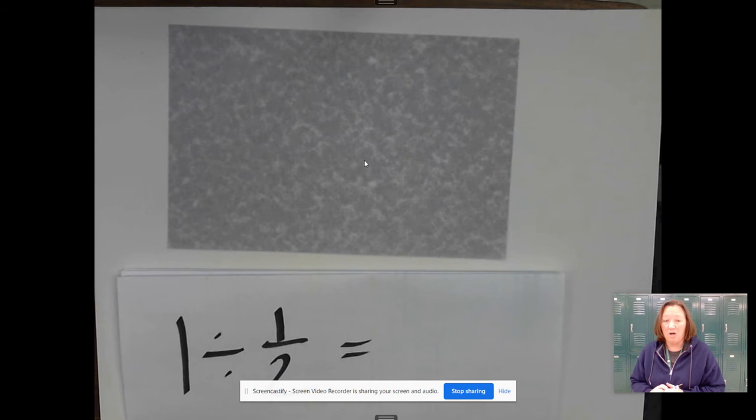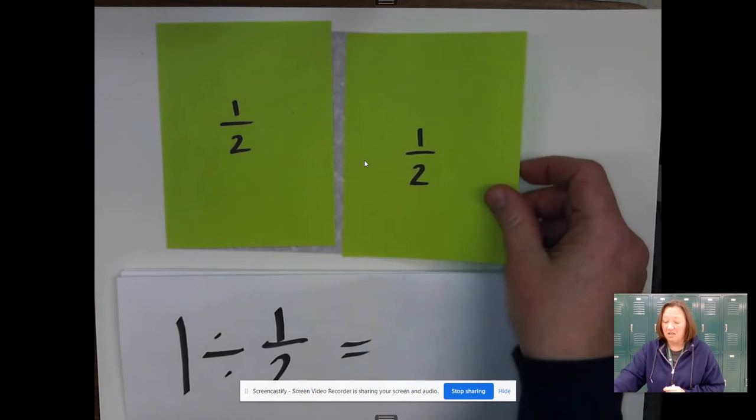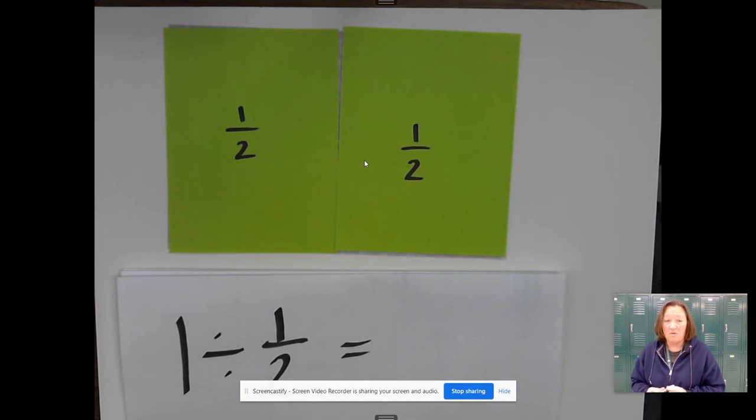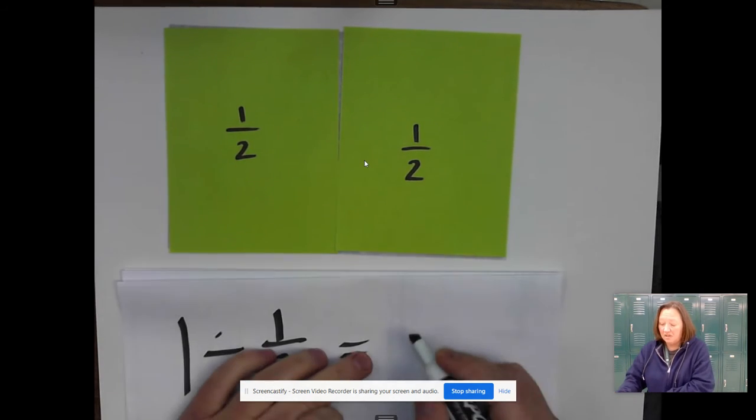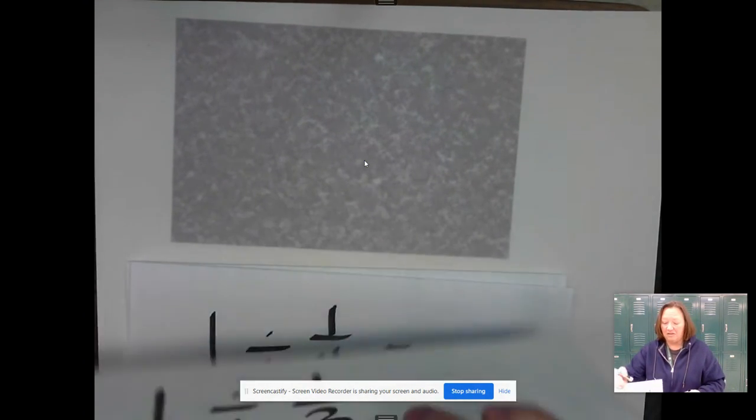How many halves are there in one whole? Well, to show that using our model, we're going to get half pieces and we're going to show that it takes two of them—two halves make one whole. So 1 divided by 1/2 equals 2.